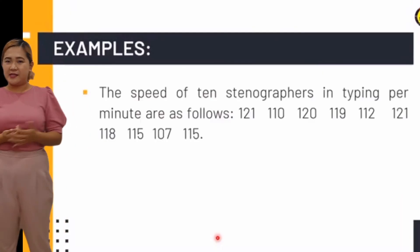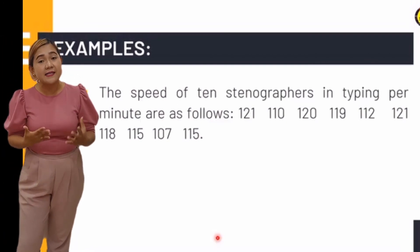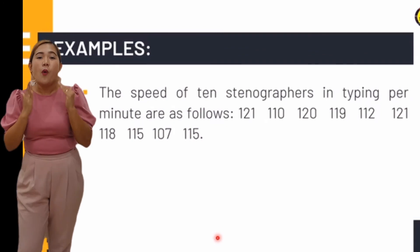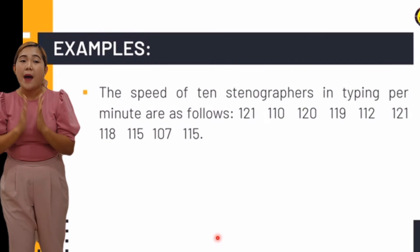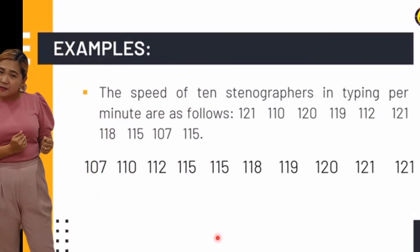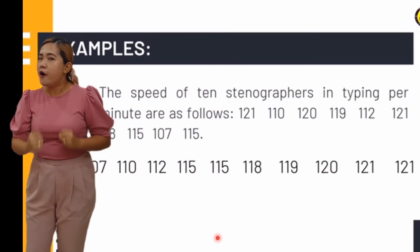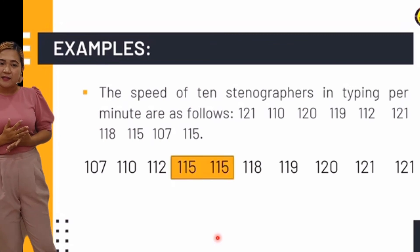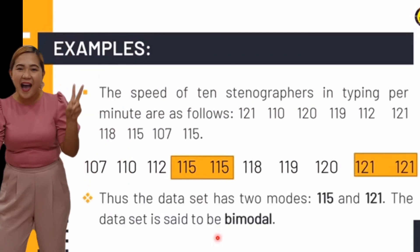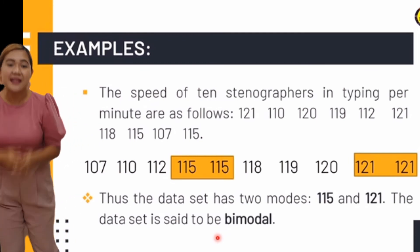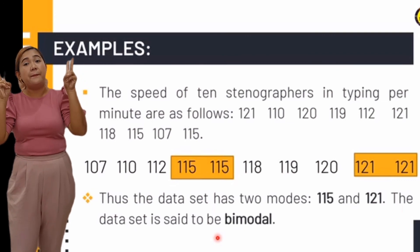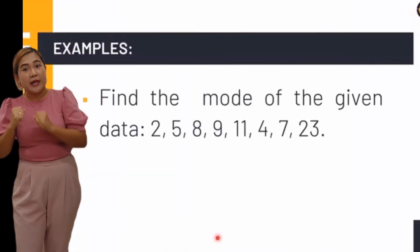Another example: The speeds of 10 stenographers in typing per minute are: 121, 110, 120, 119, 112, 121, 118, 115, 107, and 115. Arrange from least to greatest. Both 115 and 121 appear most often — they are tied! The data set is bimodal since we have two numbers that repeatedly appear, each appearing twice.